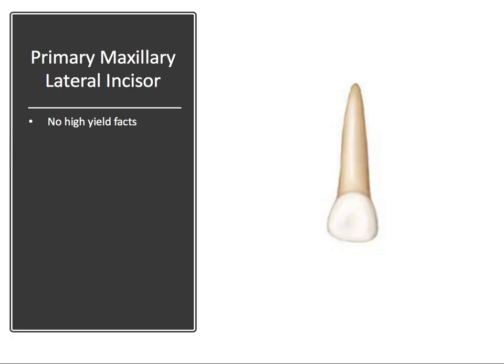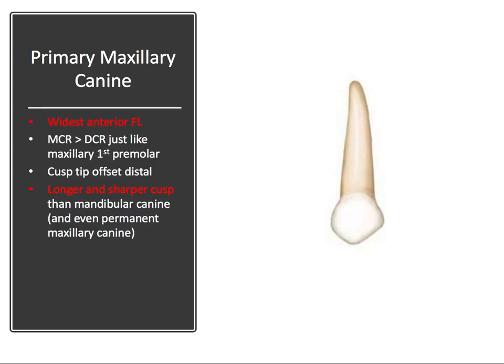The primary maxillary lateral incisor has no high yield facts, so we'll keep moving. The primary maxillary canine is the widest anterior tooth in the faciolingual direction — so of all the anterior teeth, the primary maxillary canine is the widest faciolingually.